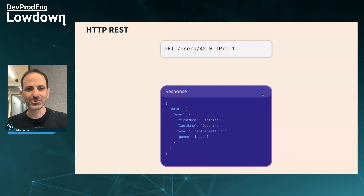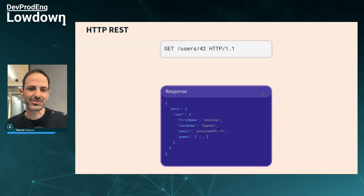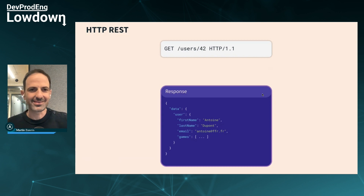GraphQL stands for Graph Query Language. I've been doing GraphQL for about three years now, actually did it before at my previous company too. It's a language to build your APIs and to query data in your backend. If you're new to GraphQL, the easiest way to explain it is to compare it to the usual stuff — HTTP REST, which has powered the internet for decades.